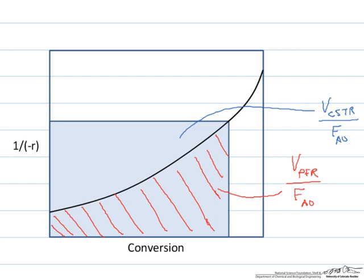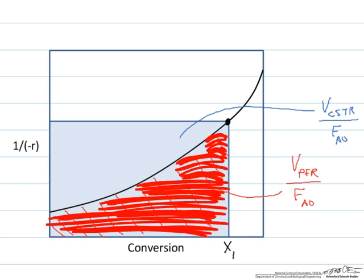As we've seen in an earlier screencast, the volume for a CSTR can be determined on a reciprocal rate plot, reciprocal rate versus conversion. The volume of the CSTR is proportional to the area of the rectangle described by the reciprocal rate curve at that given conversion, so it's equal to the conversion times the reciprocal rate, whereas the volume of the PFR required to achieve the same conversion is equal to the area under the curve that is shaded with red lines.